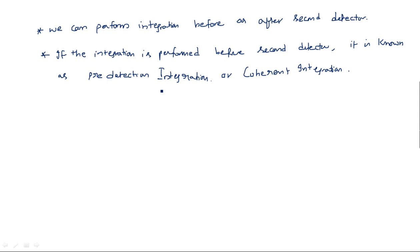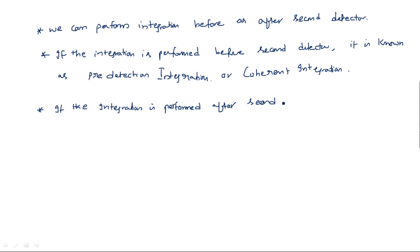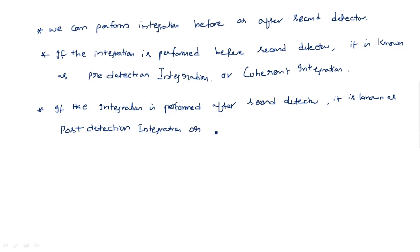Pre-detection integration preserves all phase information. After detection, however, the phase information is lost. The type of integration performed after the second detector is known as post-detection integration, also called non-coherent integration.